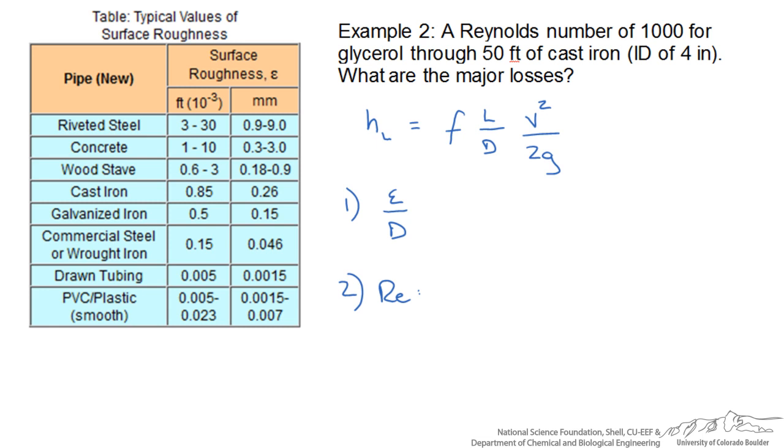Again, we calculate our relative roughness. So in this case, our roughness for cast iron is 0.00085 over 0.33 since we are working with feet. This comes out to 0.0025, where Reynolds number is again given to us in our problem, which is 1000.